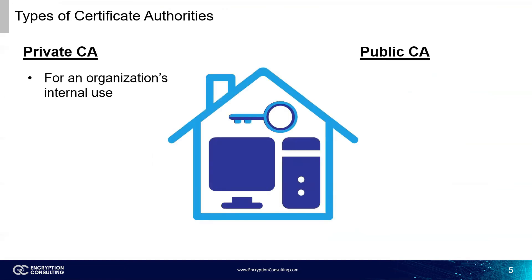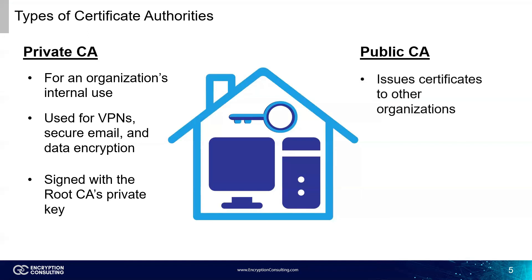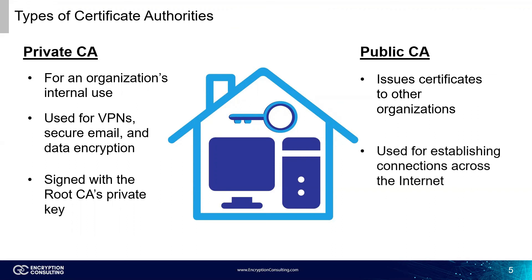Now, we'll go over the two types of certificate authorities: public CAs and private CAs. Private CAs are used in private PKIs for an organization's internal use. These purposes can range from setting up a VPN or secure email to data encryption. Certificates issued by private CAs are signed with the root CA's private key. Public CAs work within a public PKI and issue certificates to other organizations. These certificates are used to establish connections across the internet between web browsers and web pages.